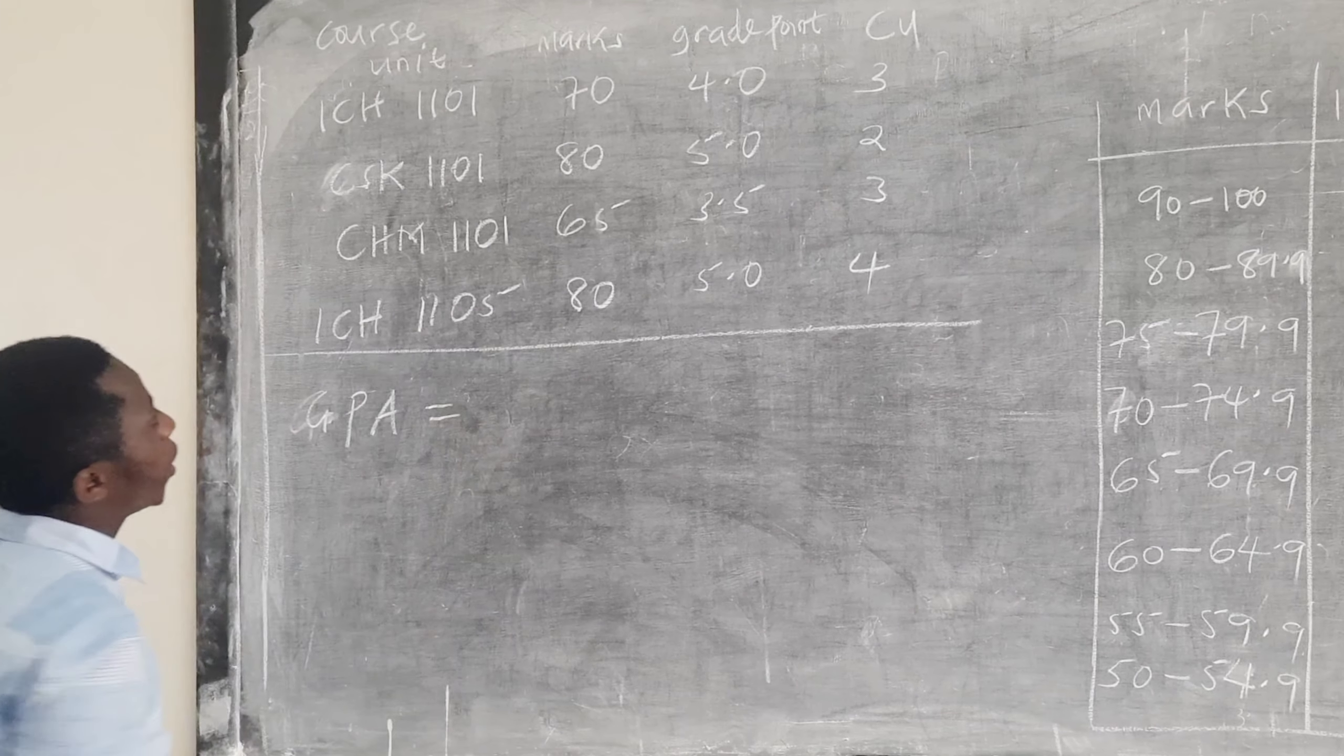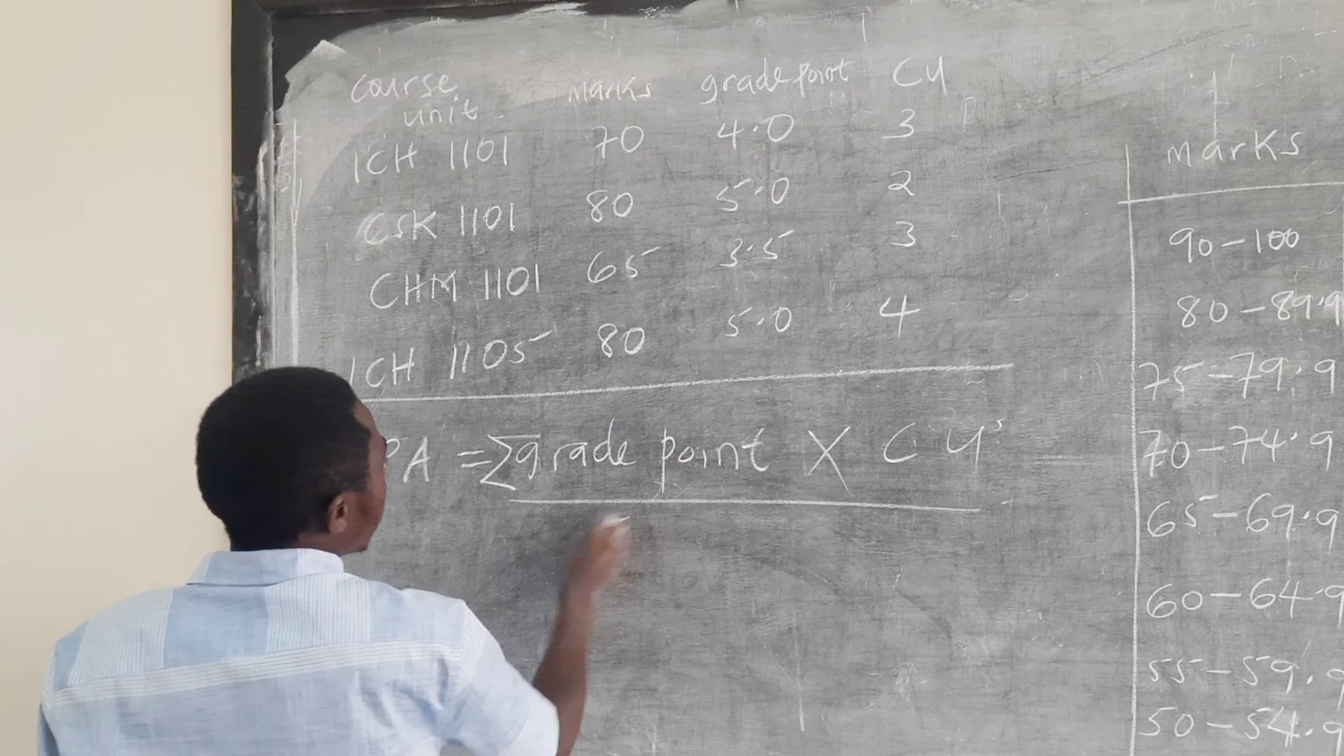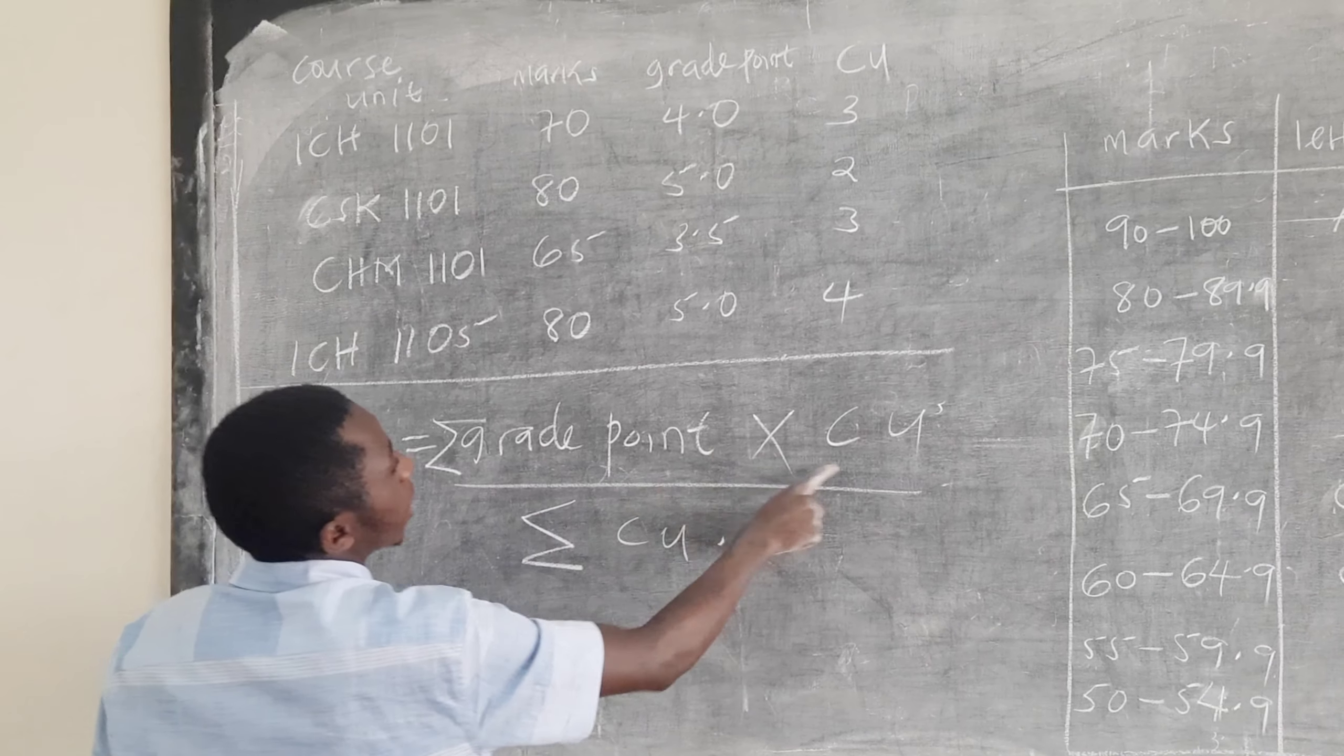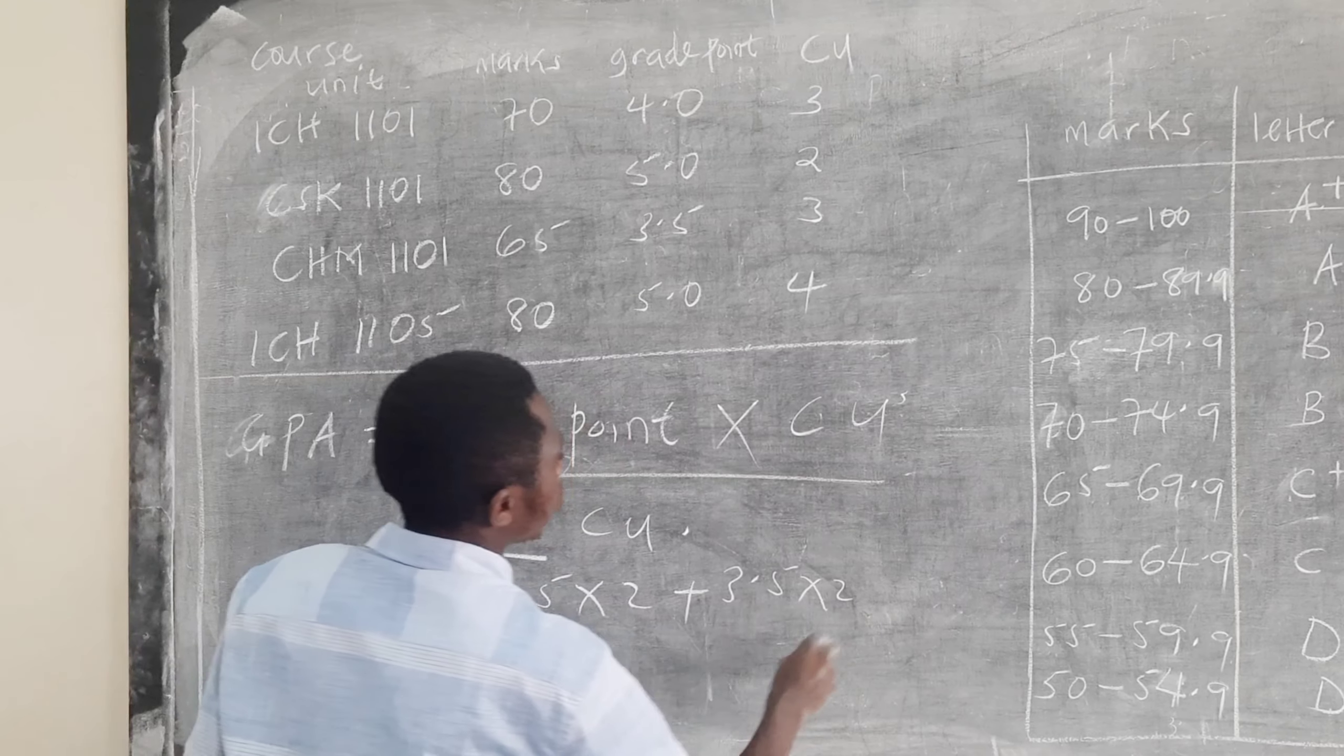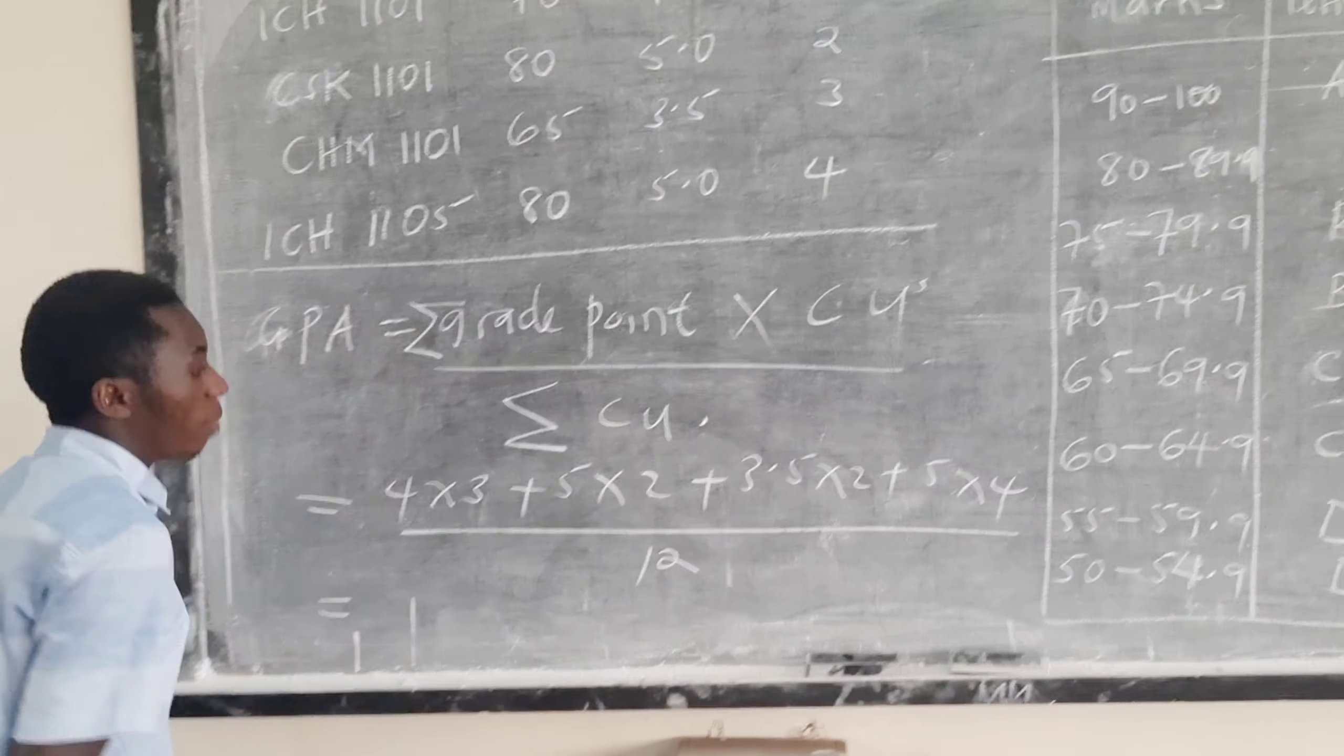Now, how do you calculate the GPA? For you to be able to come up with your GPA, you should be able to multiply the grade point. We shall have the grade point times the CU. The summations over the summation of your CUs. For example, in this given case, where I have four course units, it means I'll have the summation of grade points times CUs. It will be 4 times 3 plus 5 times 2 plus 3.5 times 2 plus 5 times 4 over the total CUs.